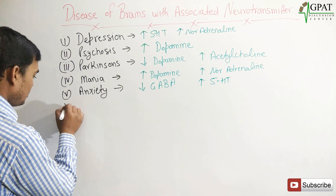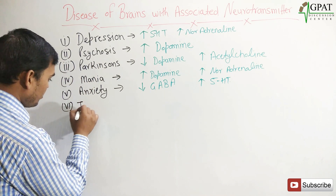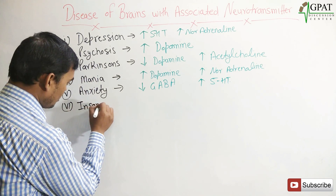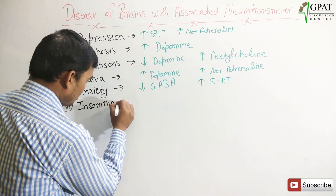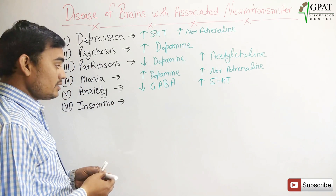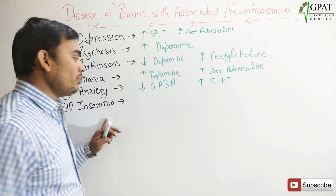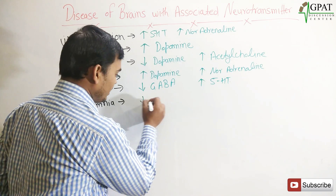Next is insomnia. In insomnia, your GABA level decreases.